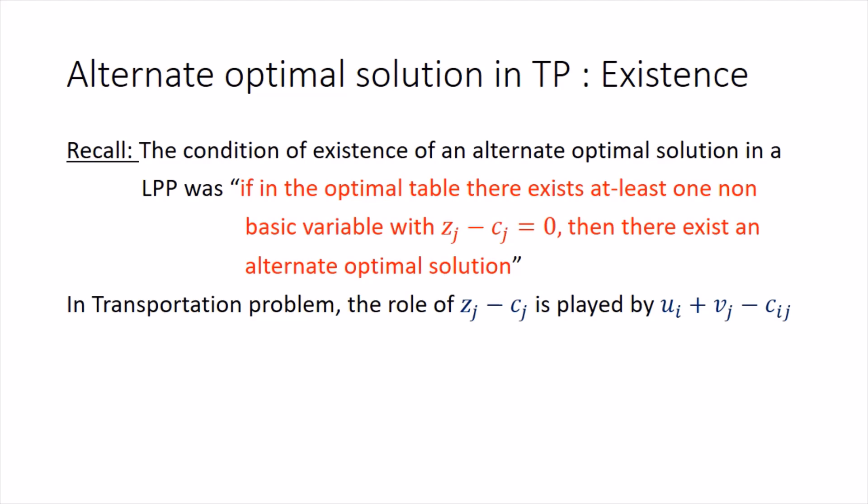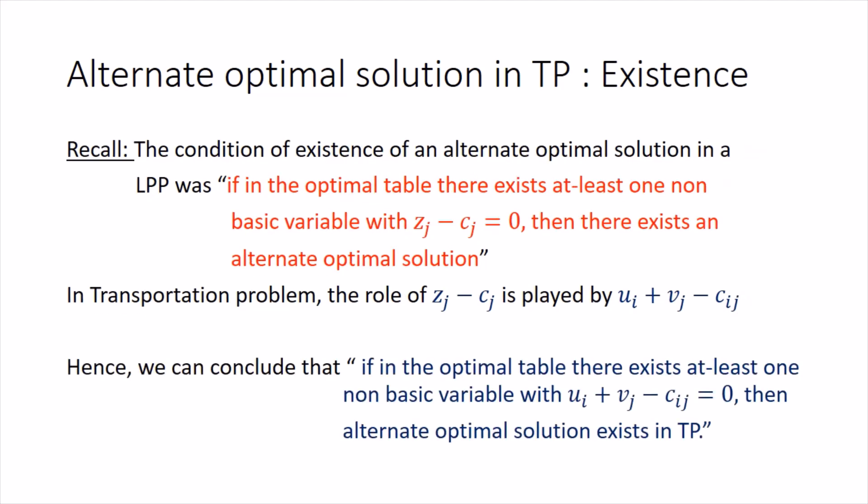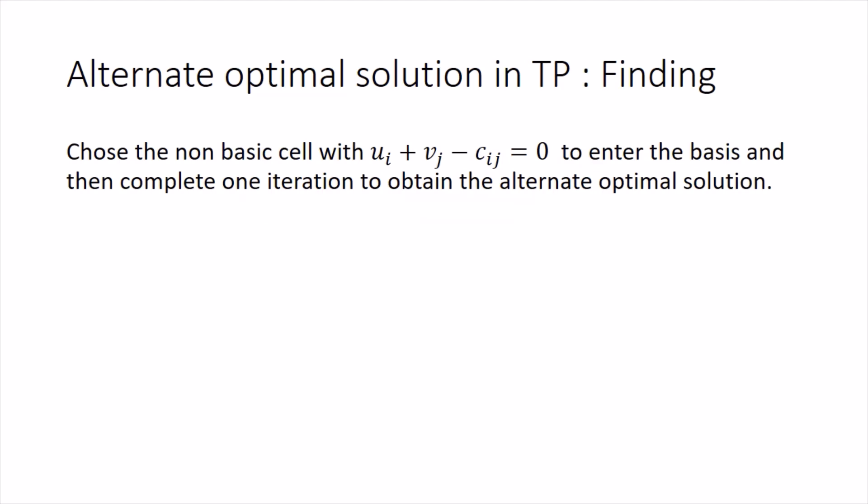We know that the role of Zj minus Cj is played by UI plus VJ minus Cij in a transportation problem. So the condition becomes: if in the optimal table there exists at least one non-basic variable with UI plus VJ minus Cij exactly equal to zero, then there will exist an alternate optimal solution. To find it, we choose that non-basic cell and enter it into the basis, completing one iteration — the same strategy used in the simplex method.